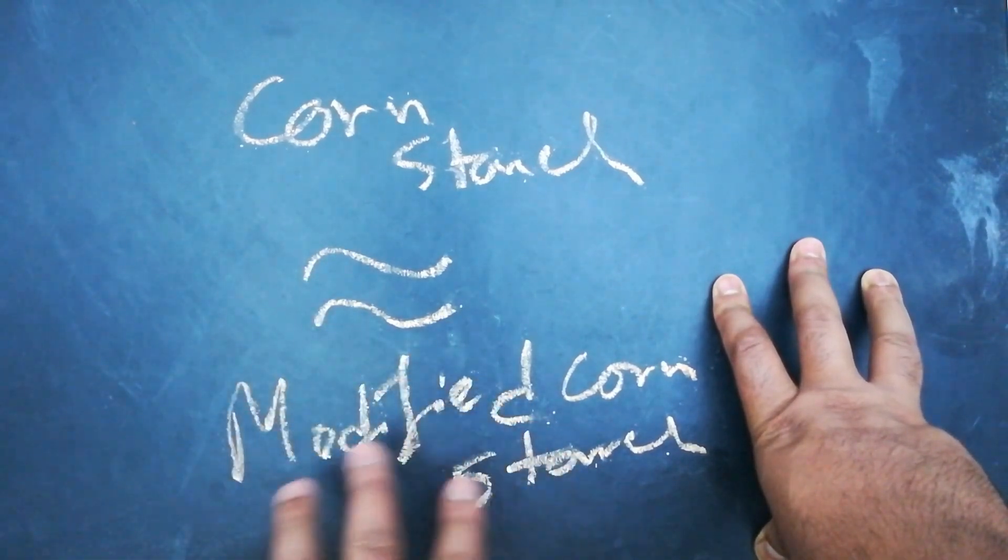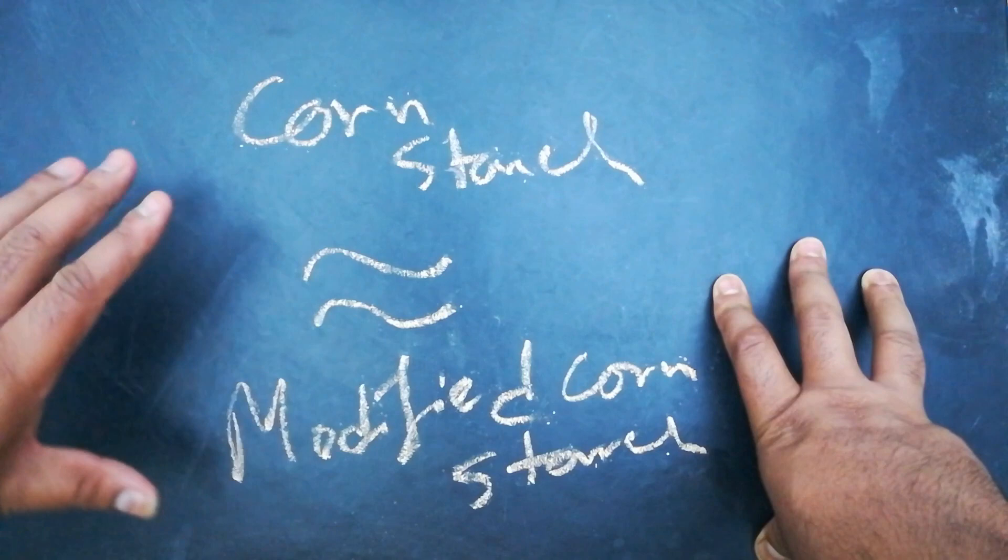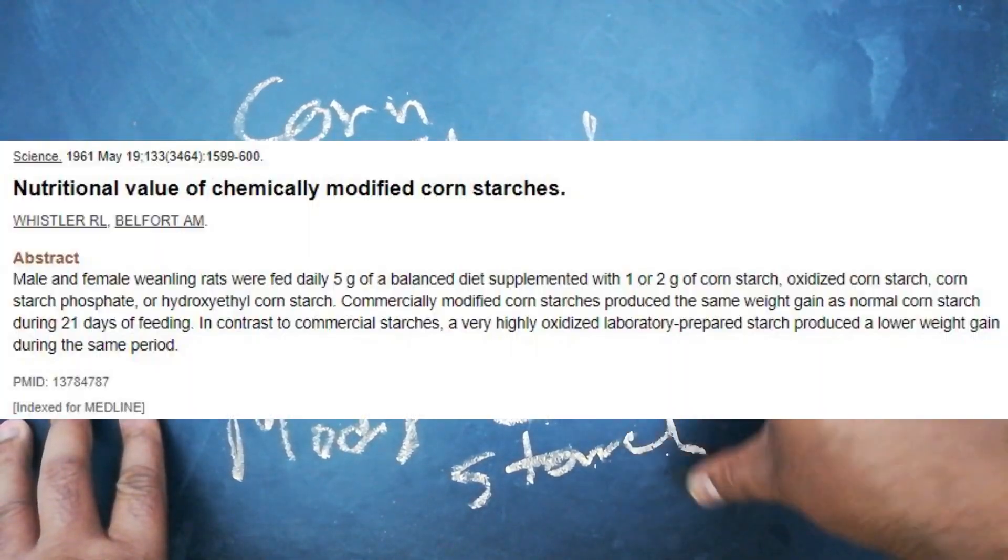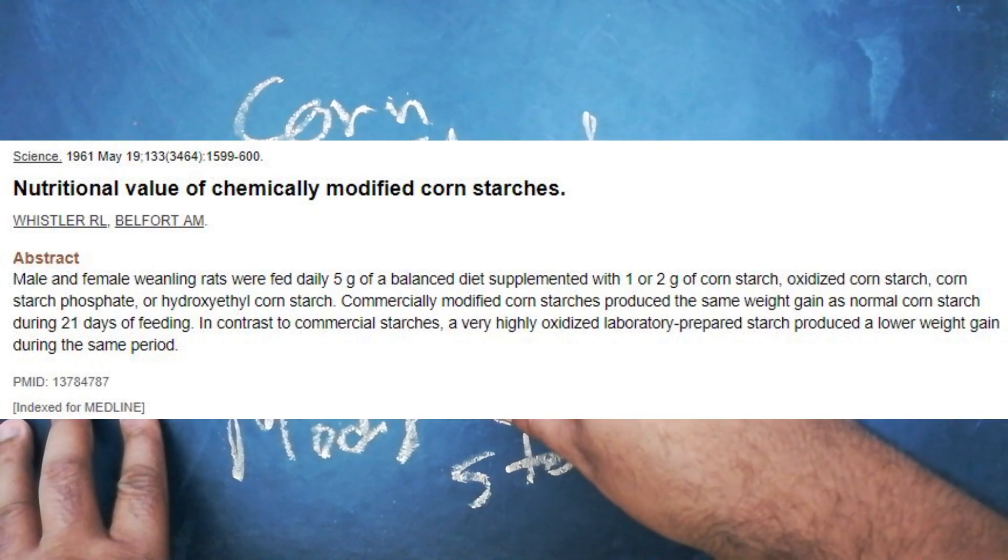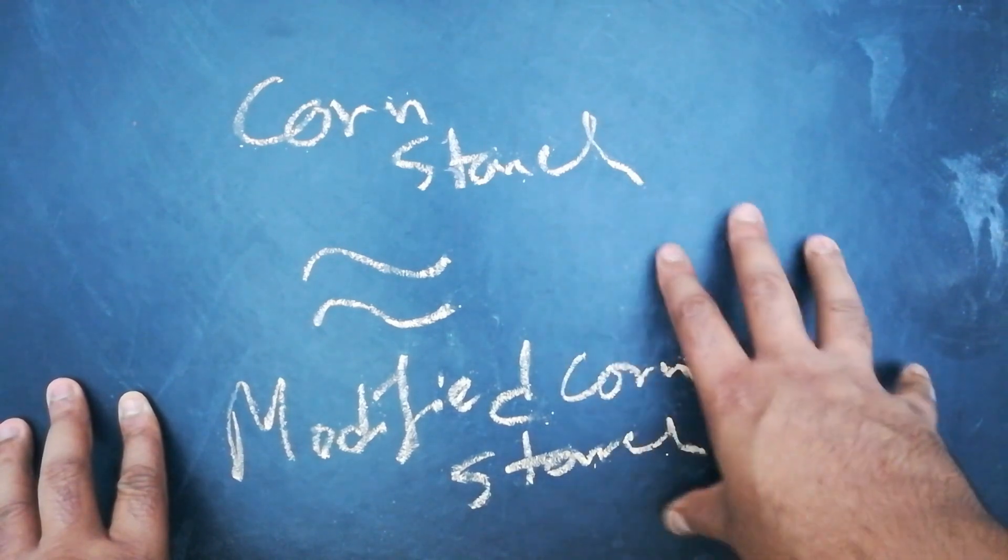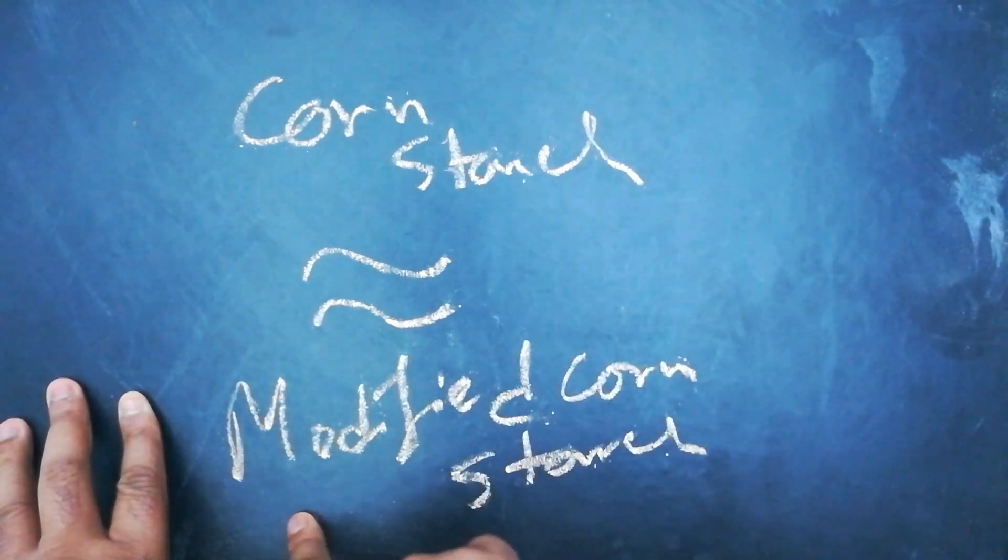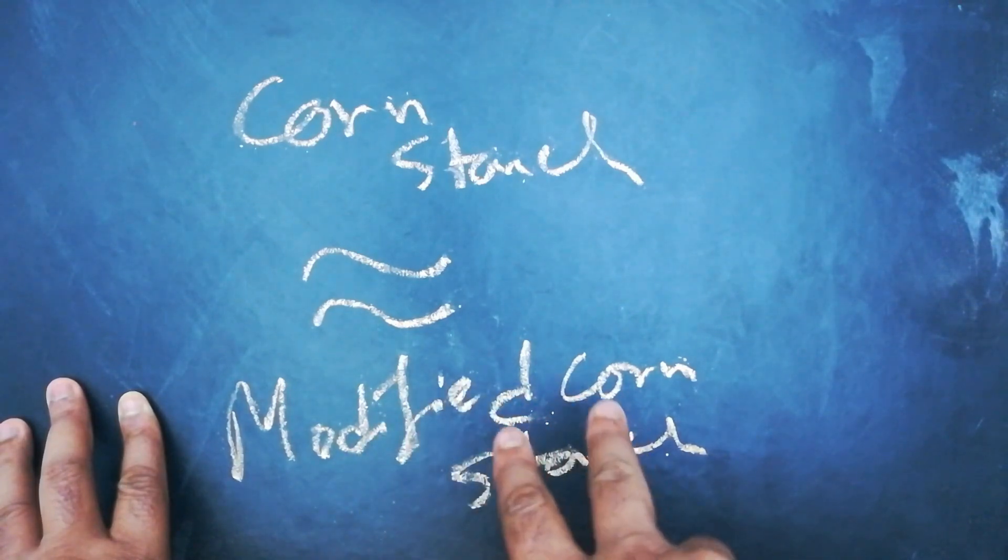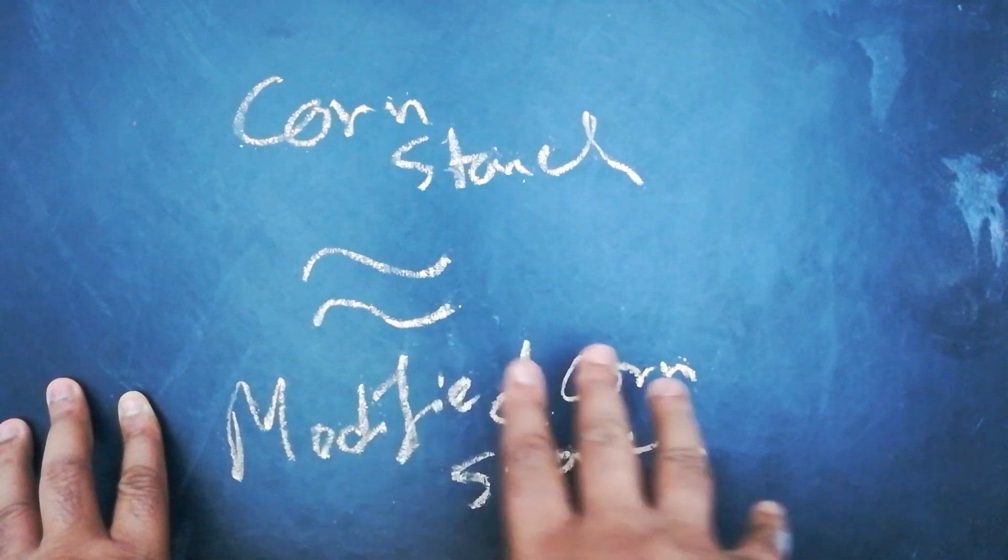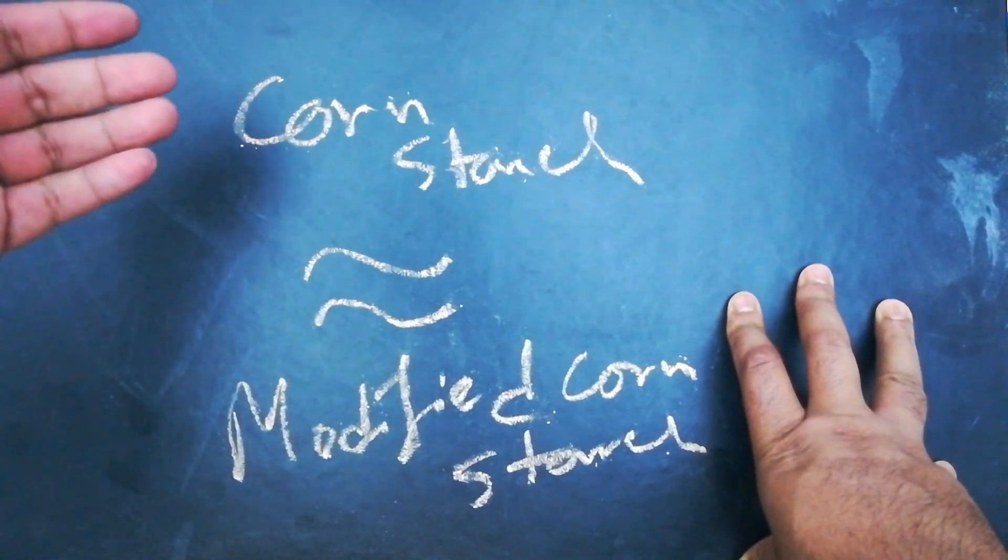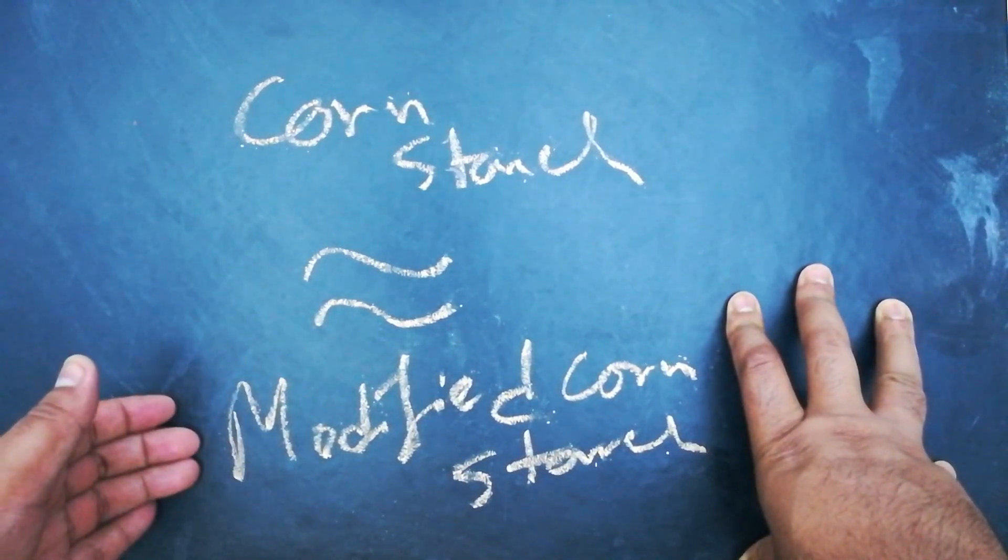There was a study done on mice where five or six healthy mice were fed cornstarch and modified cornstarch, about one gram each day for 21 days. In the modified cornstarch, both the oxidized mechanism and acid modification mechanism were used. And the weight gain that the mice had from using cornstarch and modified cornstarch of both procedures was not significantly different.